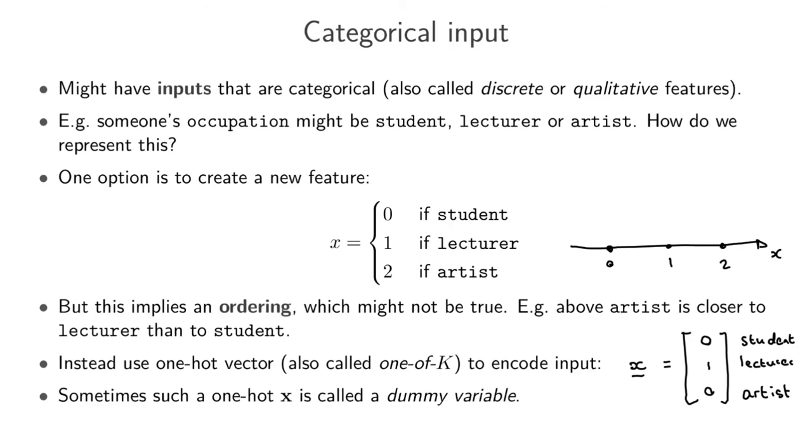Now you can maybe scribble this out for yourself a little bit, maybe with linear regression. But you will see that this type of representation doesn't imply an implicit ordering of your input types. So sometimes one-hot vector is also called the one-of-K encoding. So here K would be three, so it's a one-of-three encoding. And sometimes the resulting vector x is called a dummy variable. It's not the exact class input. We basically encoded that into some dummy form.